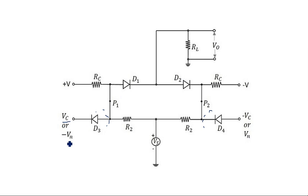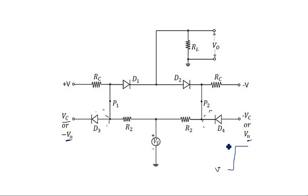By applying Vc and minus Vn: D3's N-type terminal is applied with control voltage Vc or a negative voltage Vn, and the P-type terminal of D4 is connected to minus control voltage — the negative peak of the control voltage. Depending on the selection of Vc and Vn, the value may be positive or negative. Now let us see the operation of this four diode sampling gate and how it eliminates the previous drawbacks.